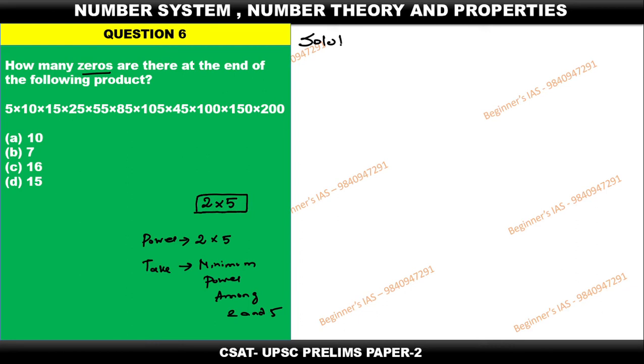Let us see the solution. Listen carefully: 5 stays as is. 10 can be expressed as 2 into 5. 15 can be expressed as 3 into 5. Then 25 can be expressed as 5 into 5.